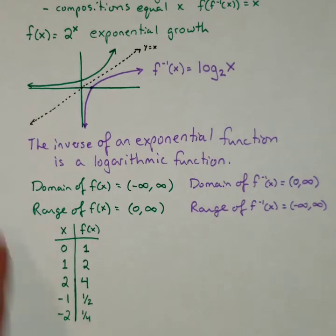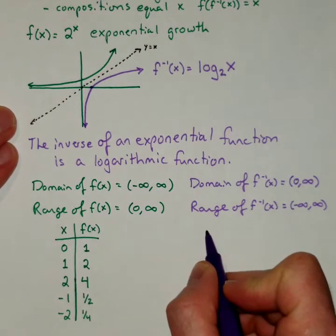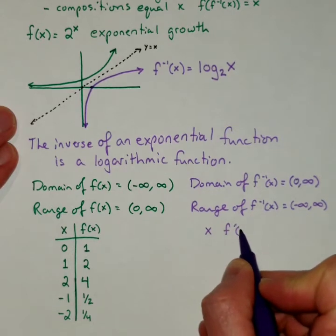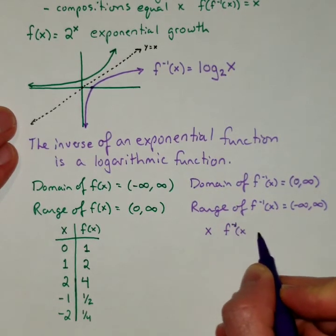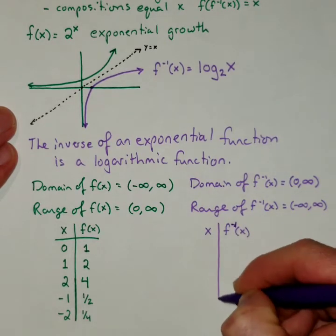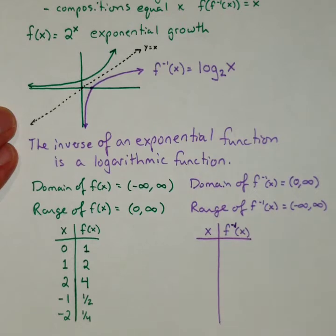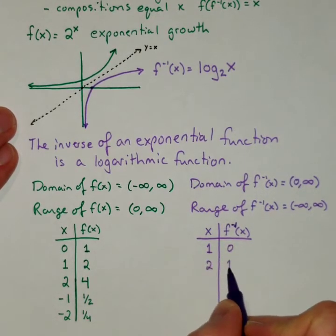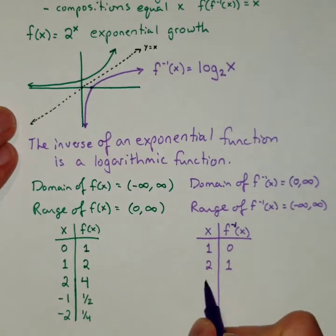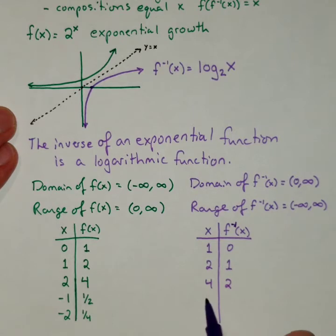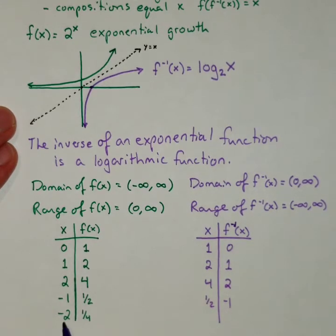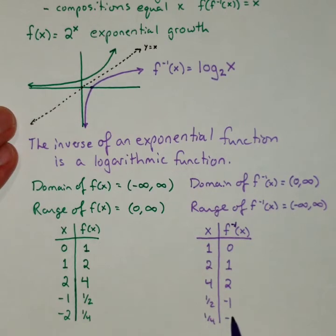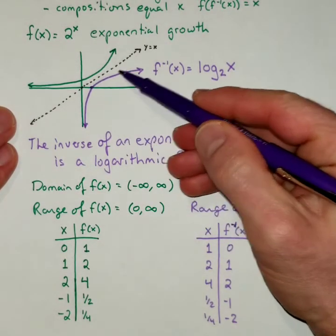So now if I were to look at the ordered pairs for the inverse, I've just got to reverse or switch all the x's and y's. So the x and f inverse of x, all of these ordered pairs switch. So instead of 0, 1, we have 1, 0. Instead of 1, 2, we have 2, 1. Instead of 2, 4, we have 4, 2. Instead of negative 1, 1 half, we have 1 half, negative 1. And instead of negative 2, 1 fourth, we have 1 fourth, negative 2. And all these ordered pairs should land on the purple graph.